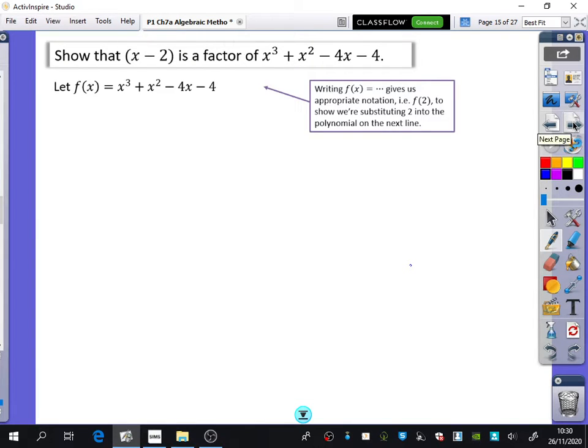So this one, it says show that x minus 2 is a factor of x cubed plus x squared minus 4x minus 4. Now, there are two ways you could do this one. One of the ways that you could do this is what we've just learned about in exercise 7b. You could do polynomial division. But we're now going to use the factor theorem to do it in a different way to show that it is a factor.